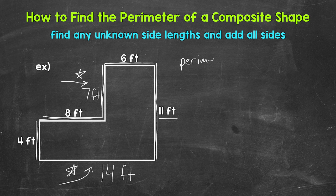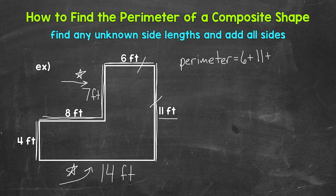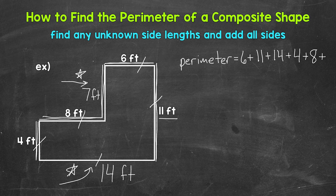Perimeter equals — and I will start with 6 feet here. So 6 plus 11, and I'm going to cross off the sides as I go around so I make sure I don't forget anything or count anything twice. So next we have 14 plus 4 plus 8 plus 7.